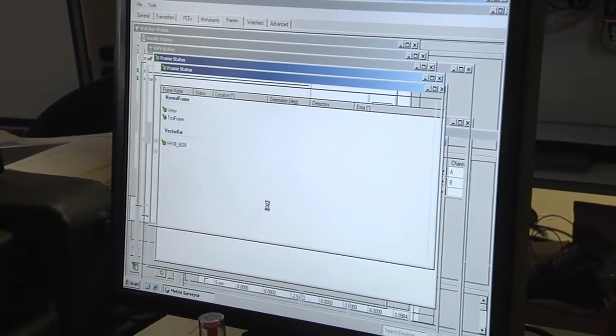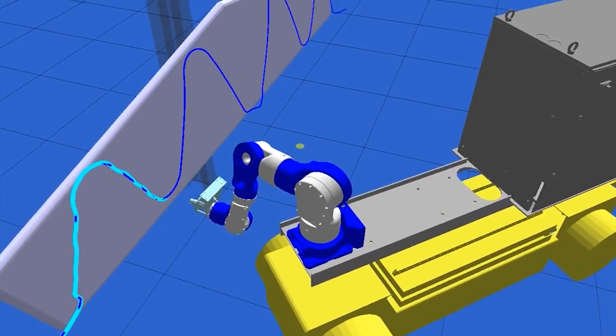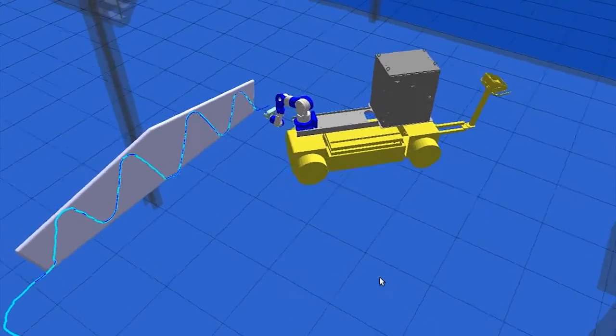We used a mix of C++ math and robotics libraries to integrate the components of the system together. To help us understand the performance of the system, we used this open-source visualization tool from ROS called RViz, which let us overlay the IGPS data onto 3D models of Mr. Roam.